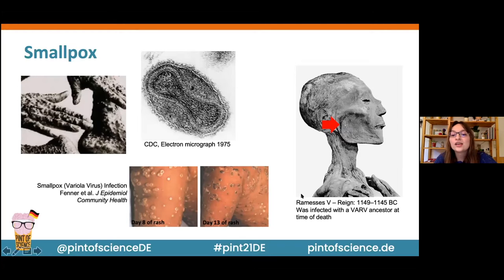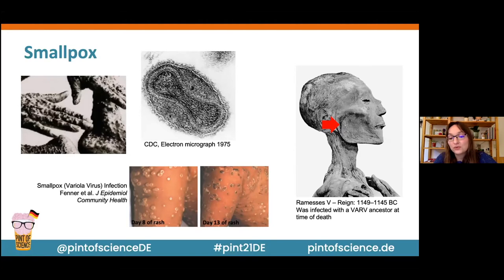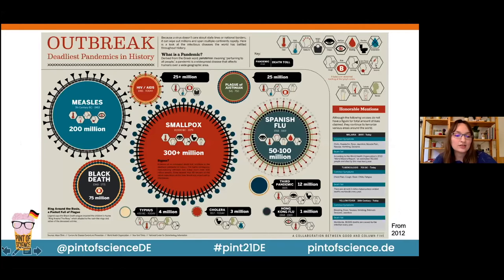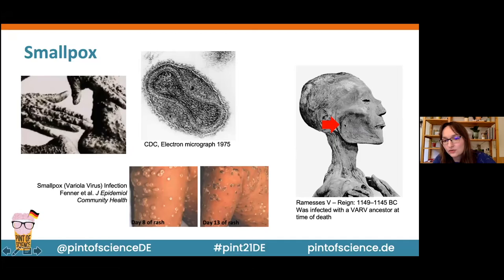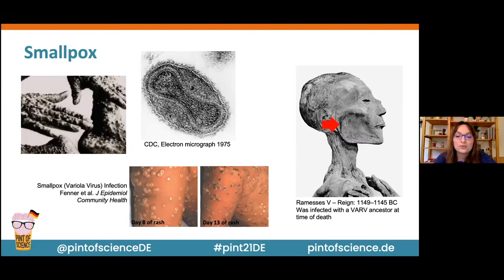Pox infections have been around for a really long time. This is the mummified remains of the Egyptian pharaoh Ramses V, who died in 1145 BC, and you can see on his skin these round lesions — for example this one here — which are actually scars from a pox infection. People have been able to extract DNA from them, sequence it, and find that this pharaoh was at the time of death infected with an ancestor of variola virus. So over 3,000 years ago people were already being infected with pox viruses.